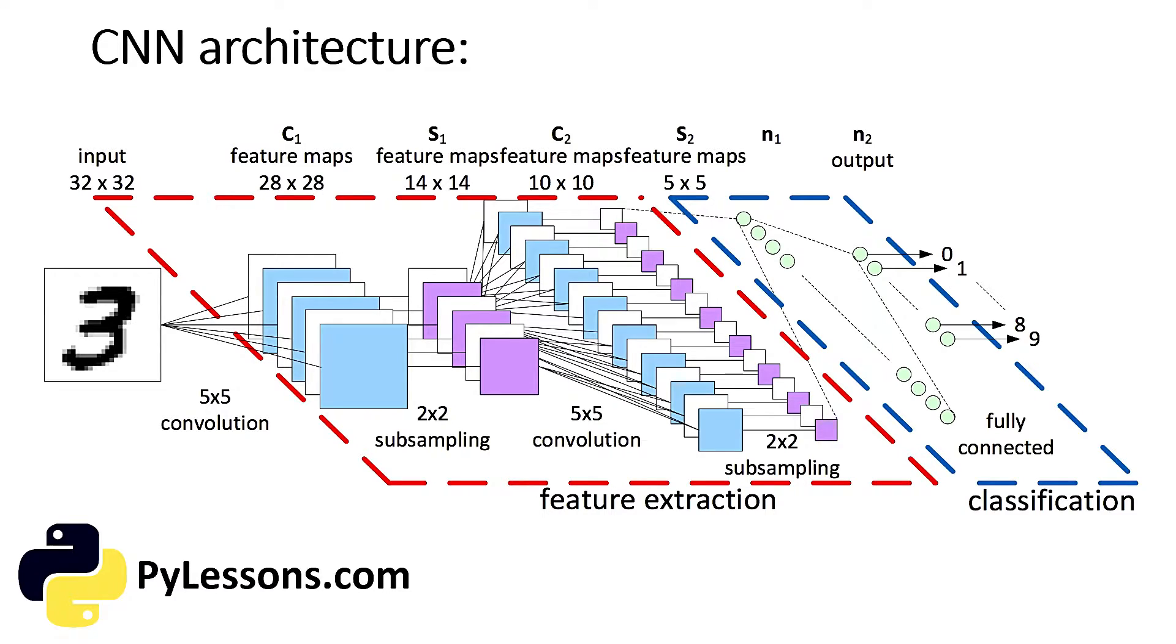A CNN is composed of two major parts. First is feature extraction. In this part, the network will perform a series of convolutions and pooling operations during which the features are detected. If you had a picture of a zebra, this is the part where the network would recognize its stripes, two ears, and four legs.